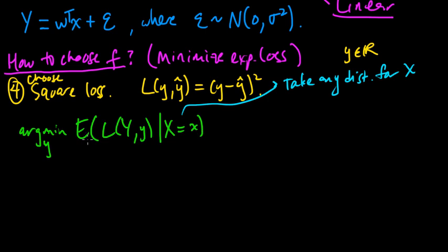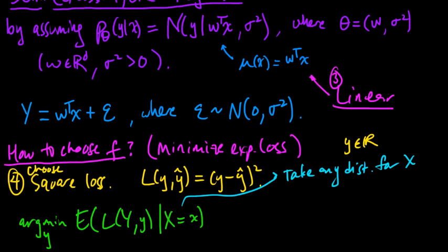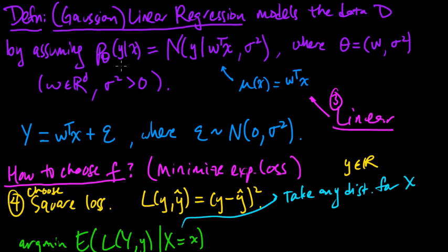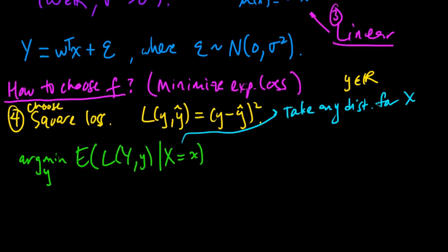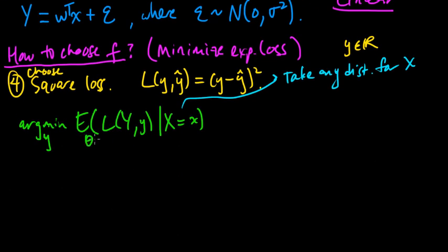So, we have this conditional expectation, and our probabilistic model here for linear regression, it depends on this parameter theta, right? So, let's assume, for now, let's assume some value of theta. So, here I just mean computing the expected value of y, we're assuming some w and sigma squared.